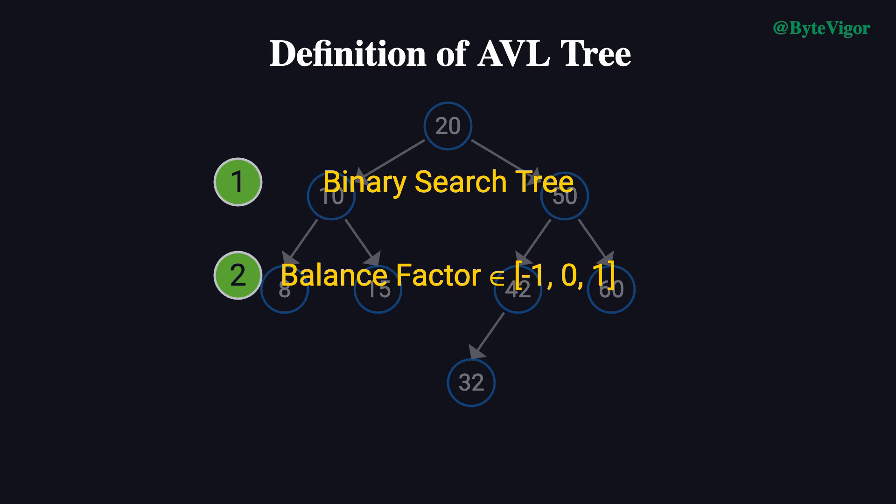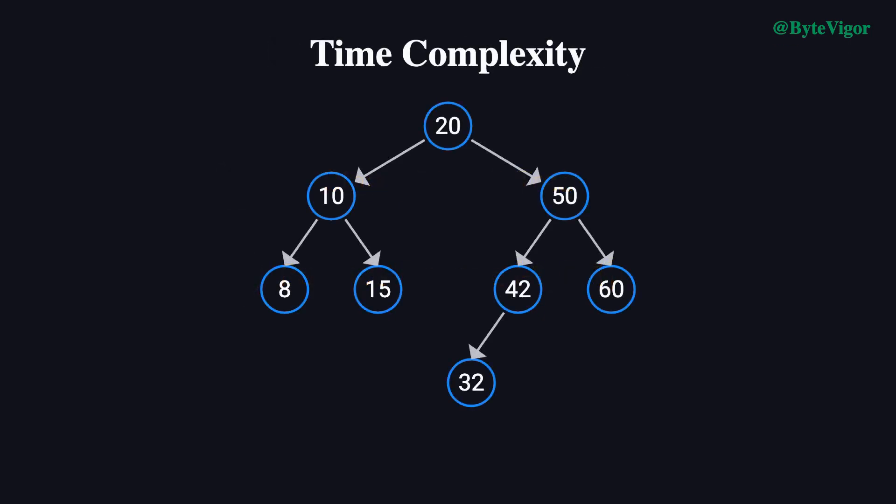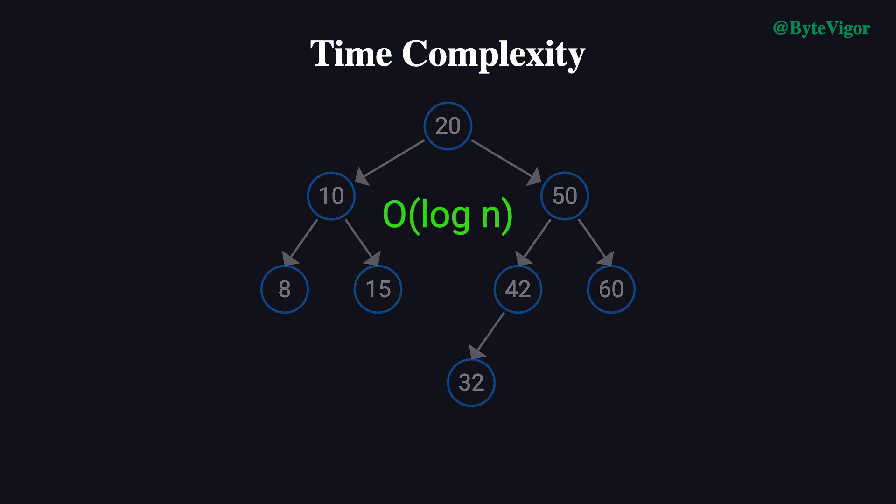We'll take a closer look at how rotations work in the next video. Because AVL trees strictly maintain balance, they are highly efficient in terms of time complexity. Whether it's searching, inserting, or deleting, AVL trees have an average time complexity of O(log N), where N is the number of nodes in the tree.